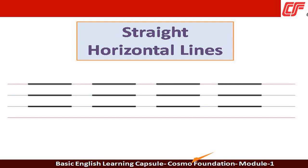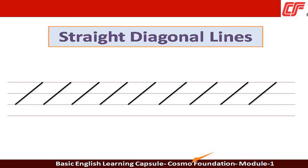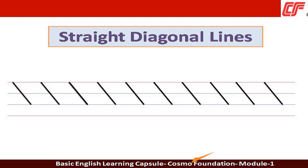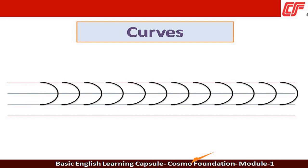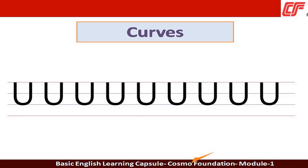Have aapni samaksha prastut chhe Straight Diagonal Lines. Aapan ek Straight Diagonal Lines no bijo prakar chhe. Tyar pachhi aapne shikhishu Curves. Aapan ek curve no prakar chhe — curve vivid rite kari shakay chhe.